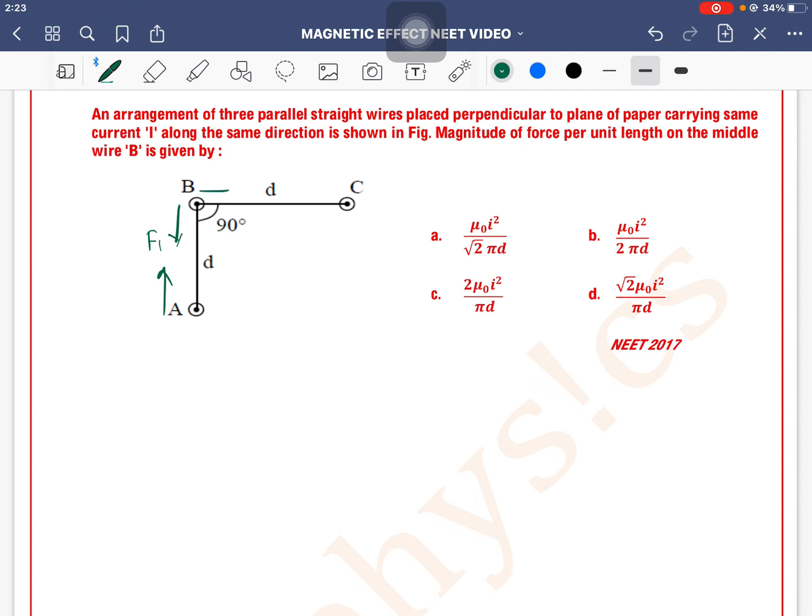And this is the force F1. As well as wire B and C, what happens between them? Attraction.